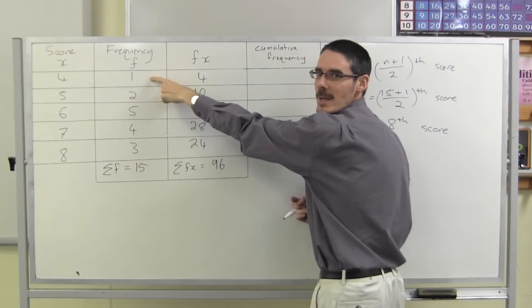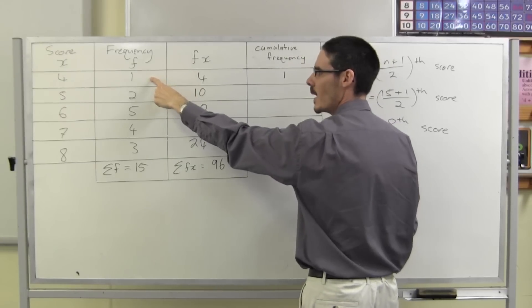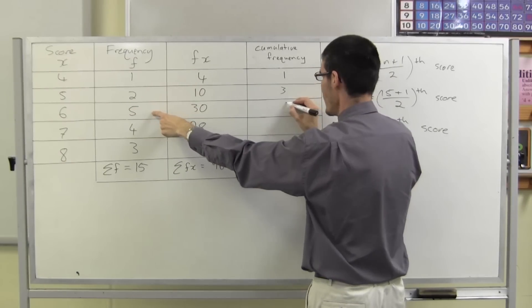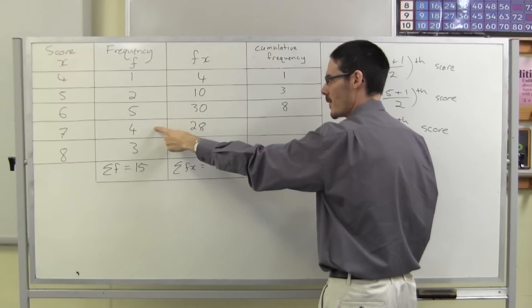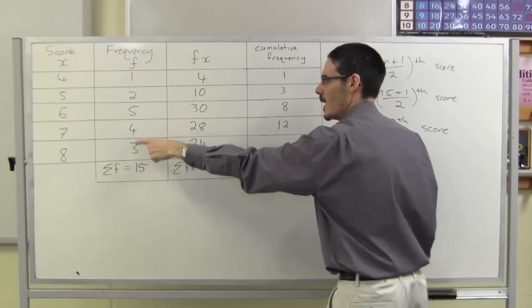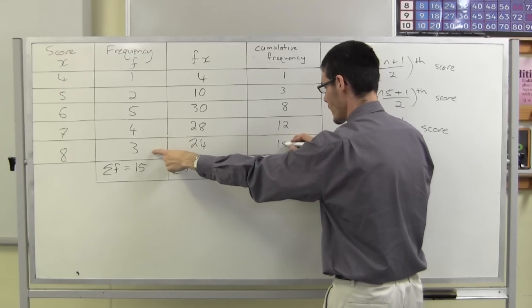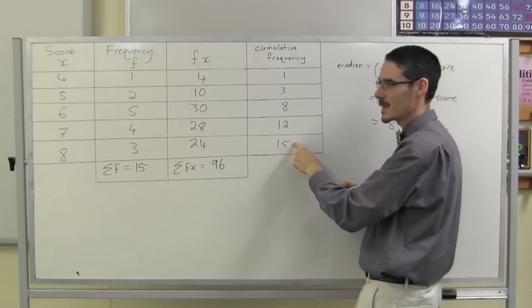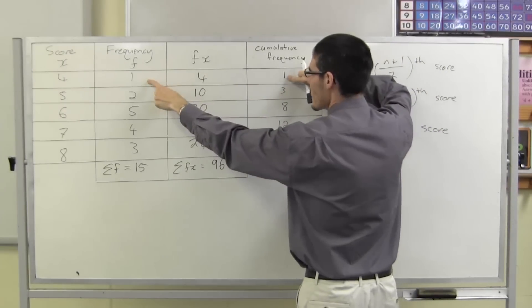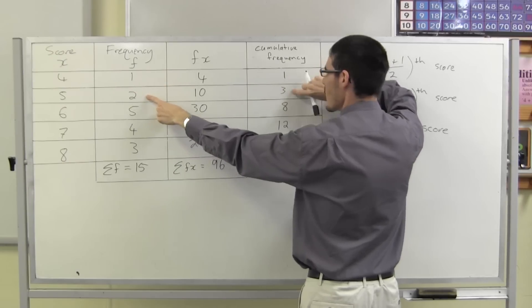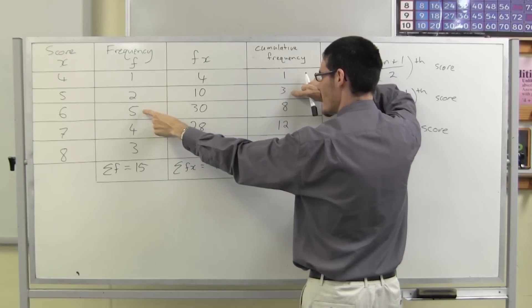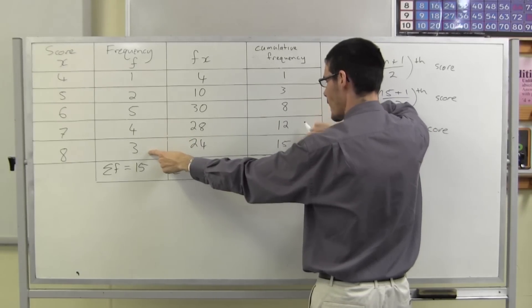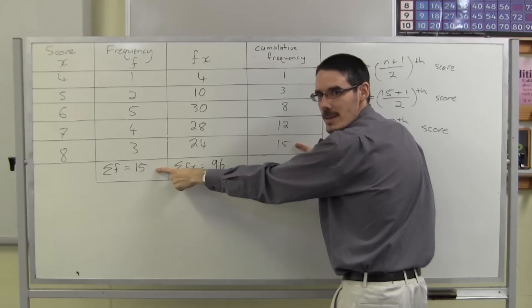So: how many scores have I seen so far? Just 1. Now I've seen another 2, making 3. Now I've seen another 5, making 8. Now I've seen another 4, making 12. And now I've seen the last 3, making 15. Double check that the final cumulative frequency matches your total number of scores.